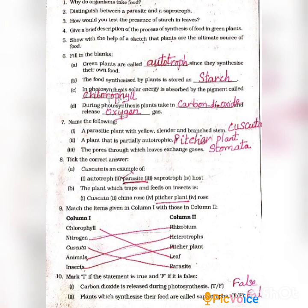Eighth question: Tick the correct answer. A. Cuscuta is an example of: autotrophs, parasite, saprotrophs, or host. Answer: parasite. B. The plant which traps and feeds on insects is: Cuscuta, China rose, pitcher plant, or rose. Answer: pitcher plant.